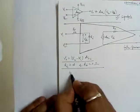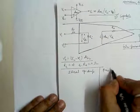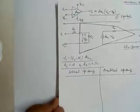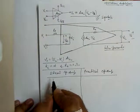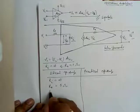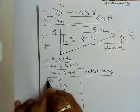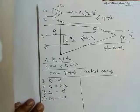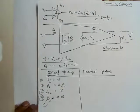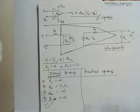Comparing ideal and practical op-amps — this is in the syllabus and may be asked as a two-mark or five-mark question. For the ideal op-amp: input resistance Ri must be infinite, output resistance must be zero, open-loop gain AOL must be infinite, and bandwidth must be infinite. These four parameters and their ideal values must be remembered.